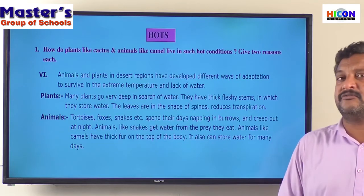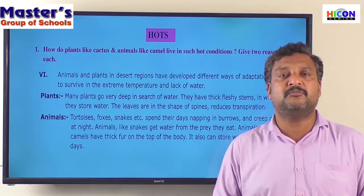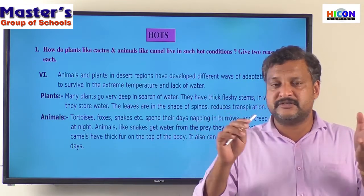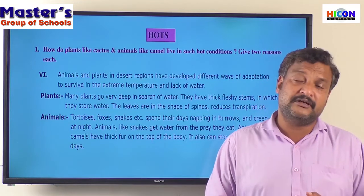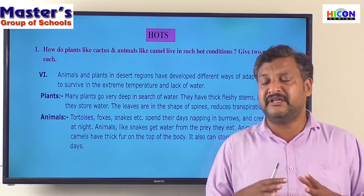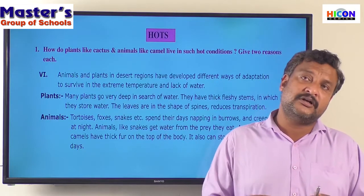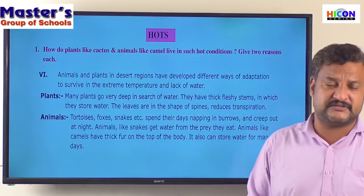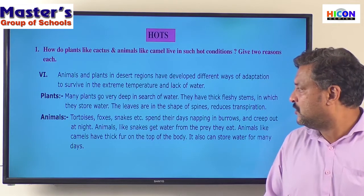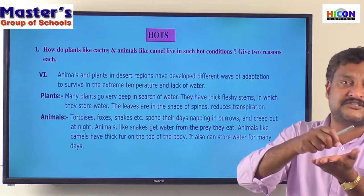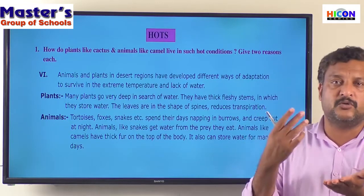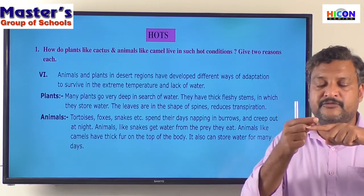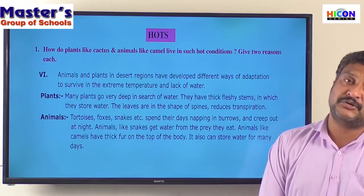Plants absorb a lot of water from the soil, and that water travels through different parts of the plant — through the branches and through the leaves. Where plants are living in extreme temperature, this water will get evaporated from the leaf. There are very small holes called pores. If a leaf is flat, it will have more pores and water will get transpirated through them. But if a leaf is in the shape of a spine, it will have very few holes and there won't be much transpiration.